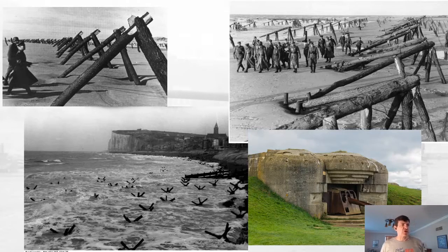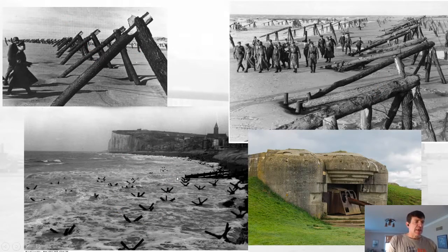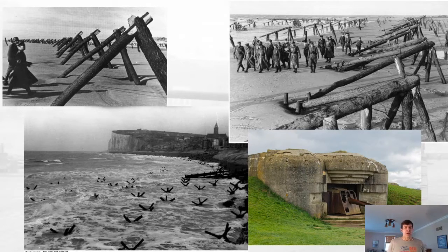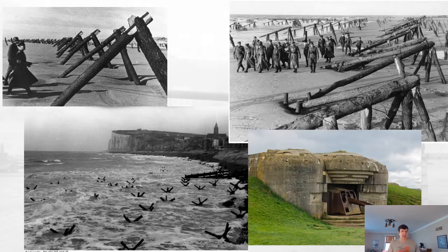These are the German beach defenses. These guns were in between Omaha and Gold Beach. These are beach defenses called hedgehogs — the idea was that at high tide, landing craft would run up on them and sink. The Germans knew the Allies had to reuse landing craft, so this would force the Allies to attack at low tide. But low tide meant a long, flat, open beach to cross, with German guns in place to rake the beaches with machine guns and artillery.